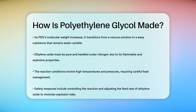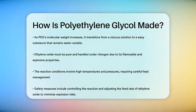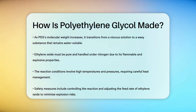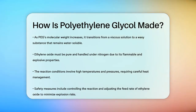In summary, the production of polyethylene glycol involves precise control over reaction conditions, the use of catalysts, and careful handling of raw materials to produce a versatile and widely used compound.